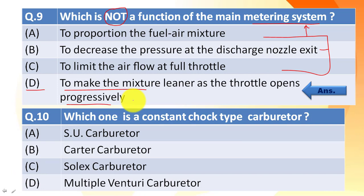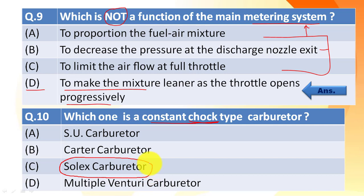The last question: which one is a constant choke type carburetor? Options are: SU carburetor, Carter carburetor, Solex carburetor, and multiple venturi carburetor. The Solex carburetor is the only simplest type carburetor which is a constant choke type carburetor. So the answer is C: Solex carburetor.